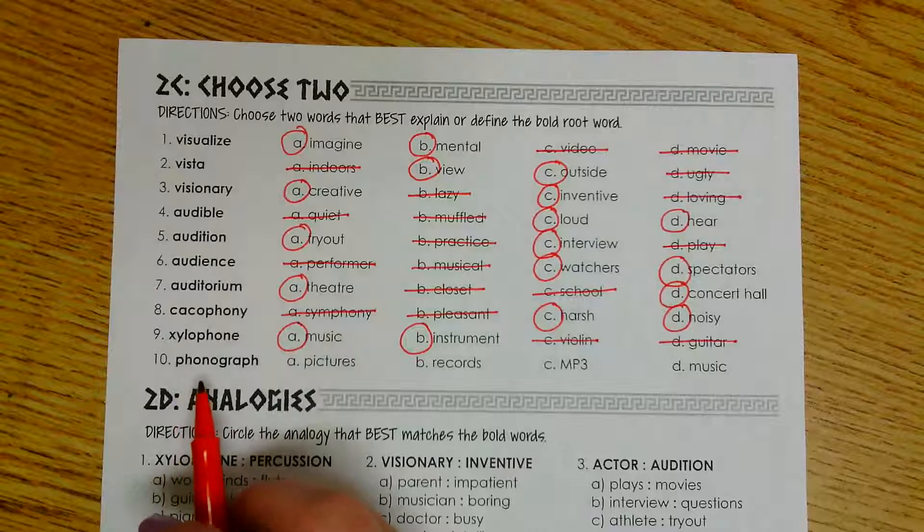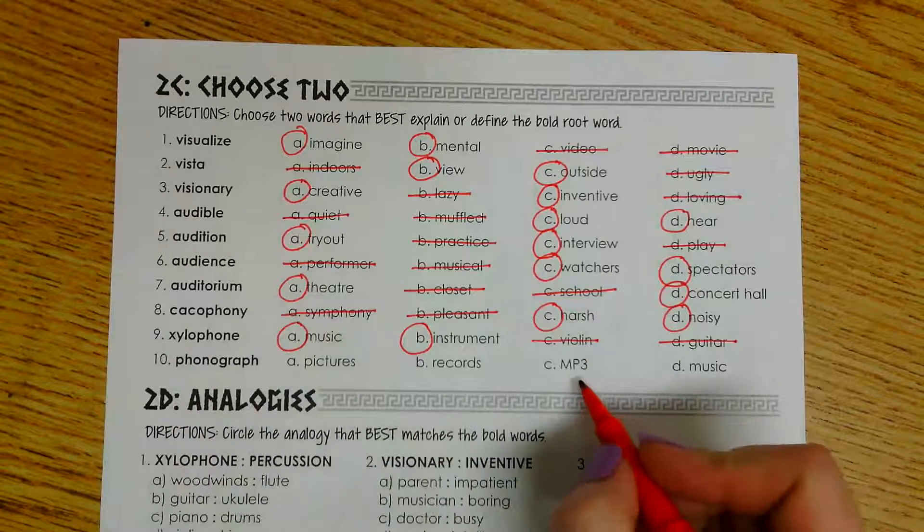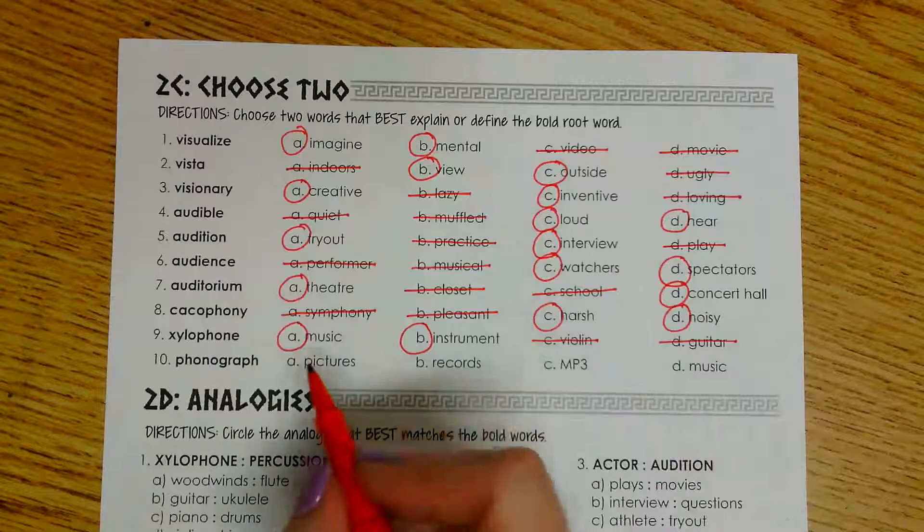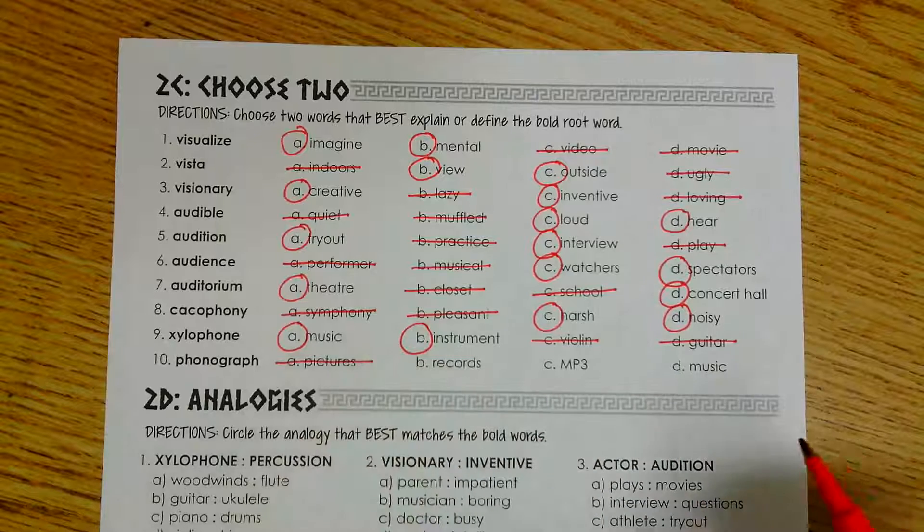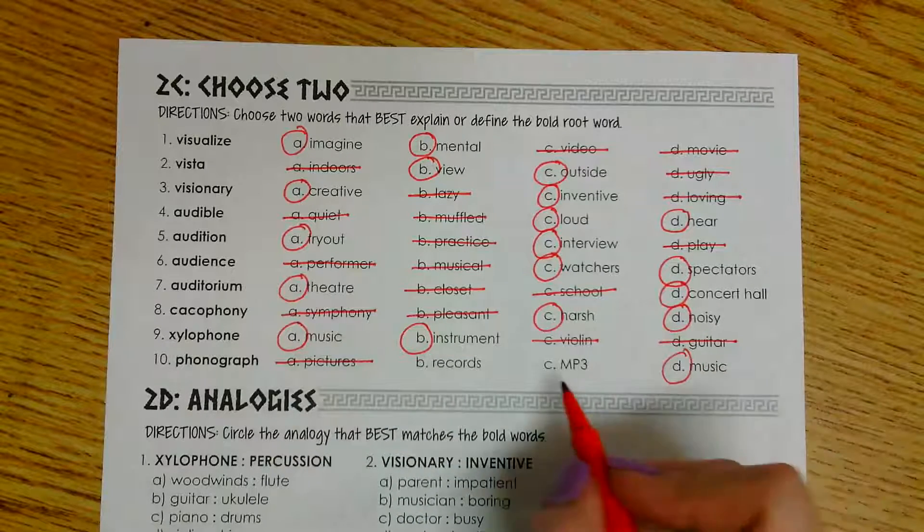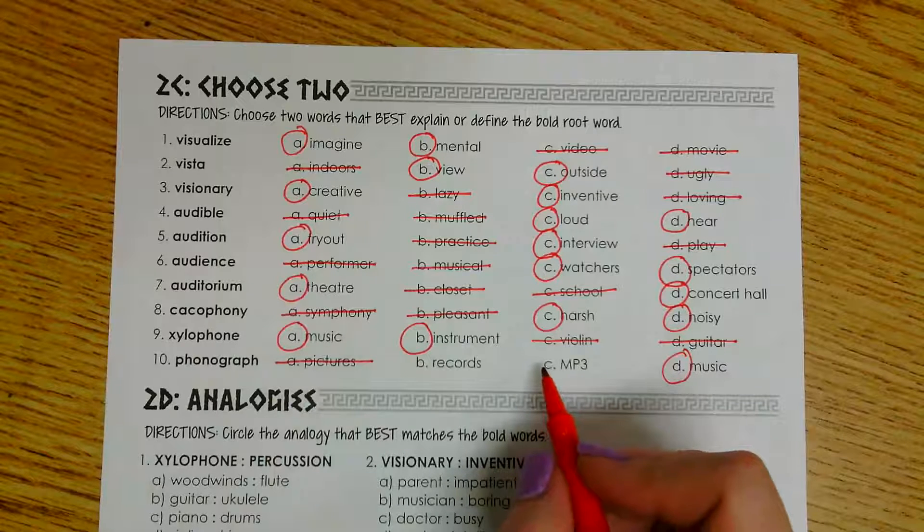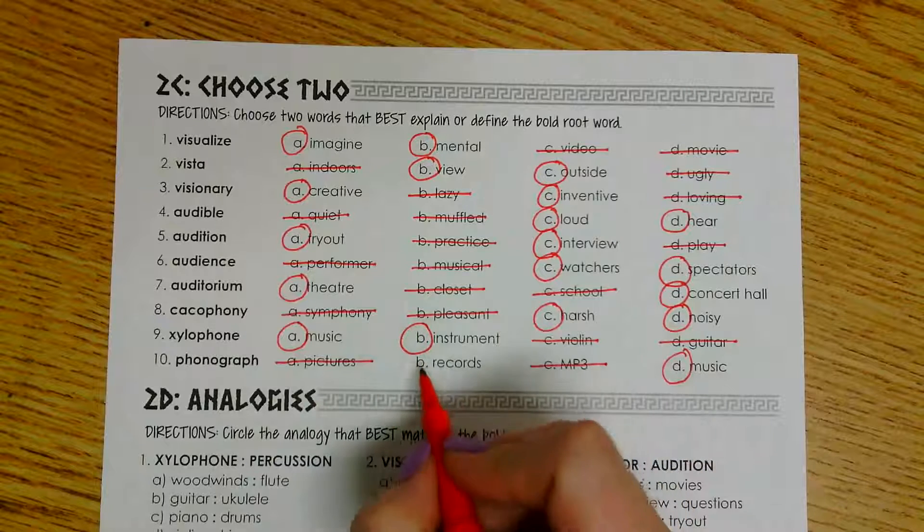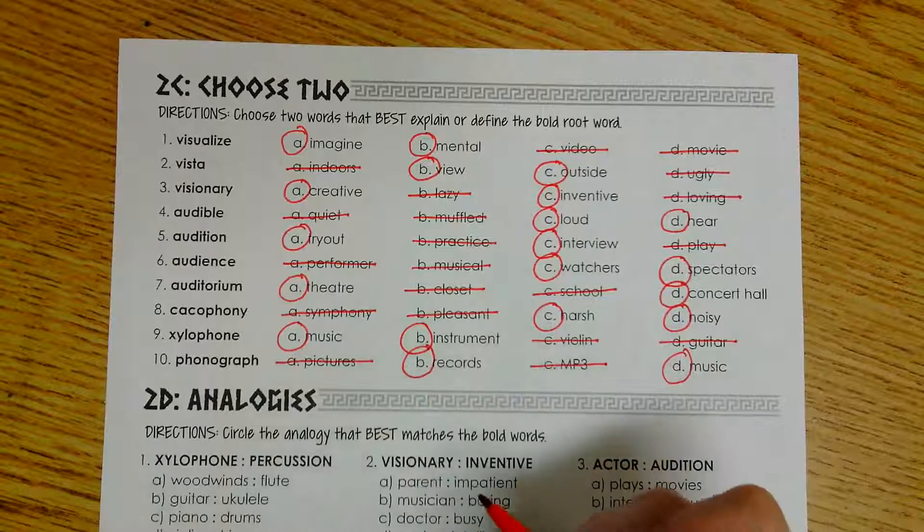And number 10, we have phonograph. We have pictures, records, mp3, and music. Well, I know that a phonograph doesn't have anything to do with pictures. I know that a phonograph does involve music. MP3 is going to be similar to the type of things that we use today to listen to music. So I know that that's probably not going to be my answer, but then records would make sense here because you put the records on the phonograph.